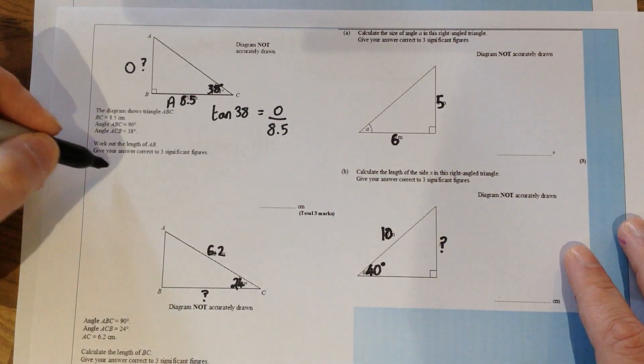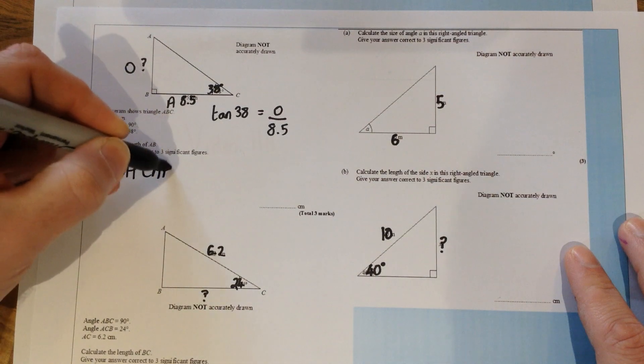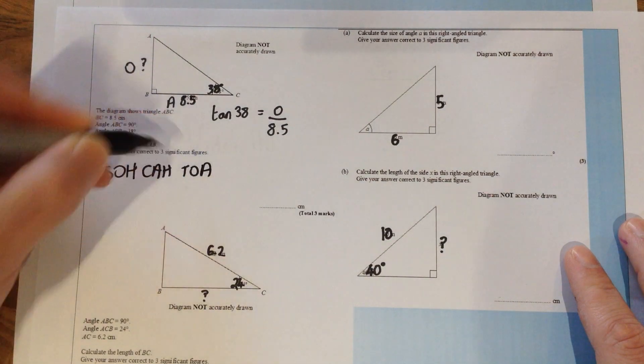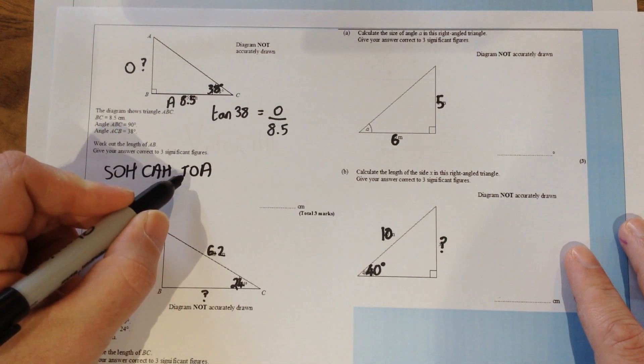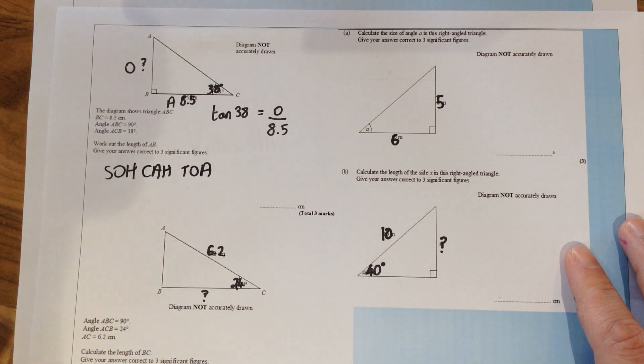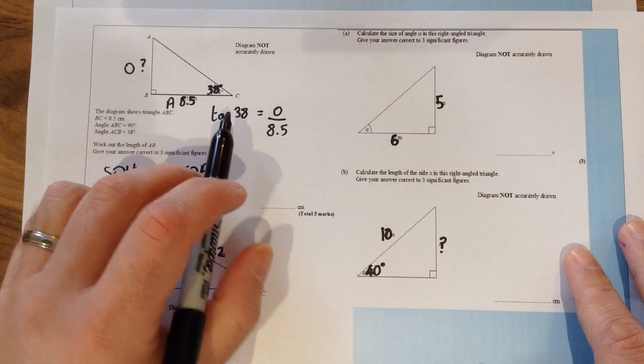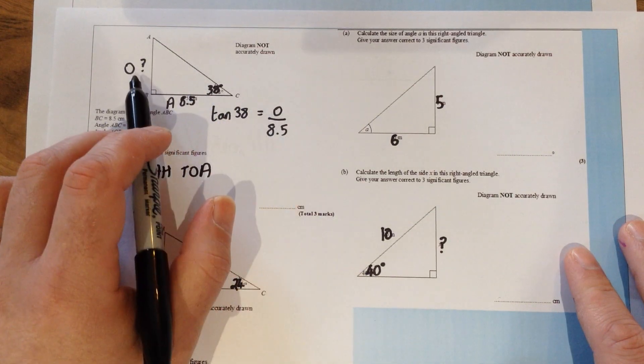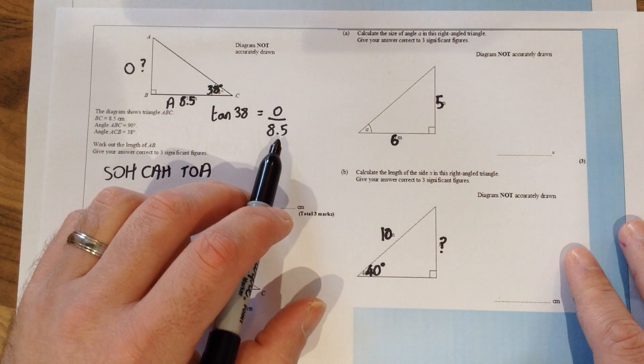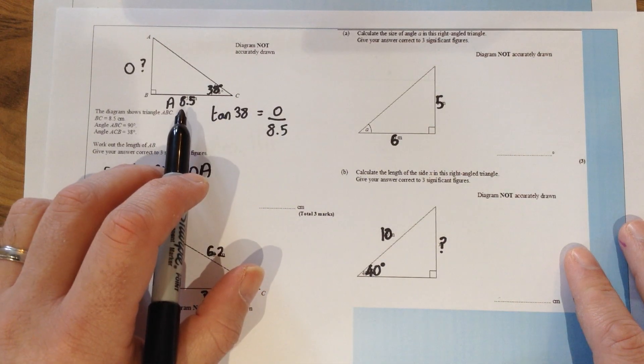In SOHCAHTOA the letters O and A are preceded by the letter T which stands for tangent. So we get from our little formula that tan of the angle, so tan of 38, is equal to the opposite side which we don't know divided by the adjacent side which was 8.5.